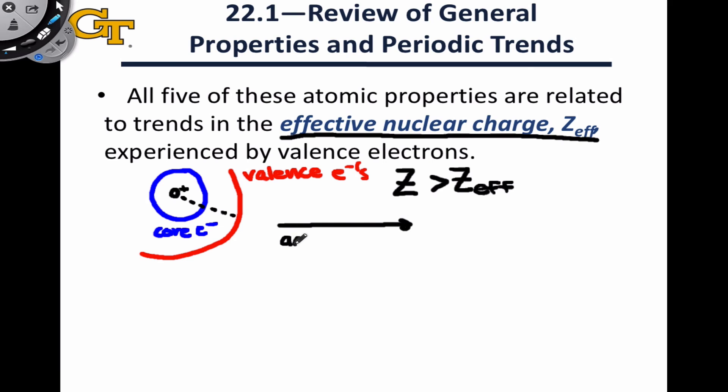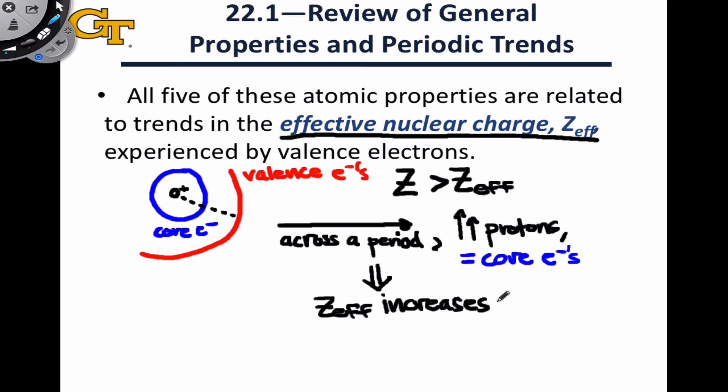As we move from left to right across a period, we're increasing the number of protons in the nucleus. However, we're not increasing the number of core electrons, since the core shells are completely filled. Because those core electrons don't improve their ability to shield the valence electrons from the nuclear charge, this means that the effective nuclear charge felt by those valence electrons increases as we move from left to right. We're adding protons without adding any core electrons to improve the shielding ability. Another way to think about this is that the effective nuclear charge approaches the actual nuclear charge. Z-effective inches closer to Z as we move across a period.